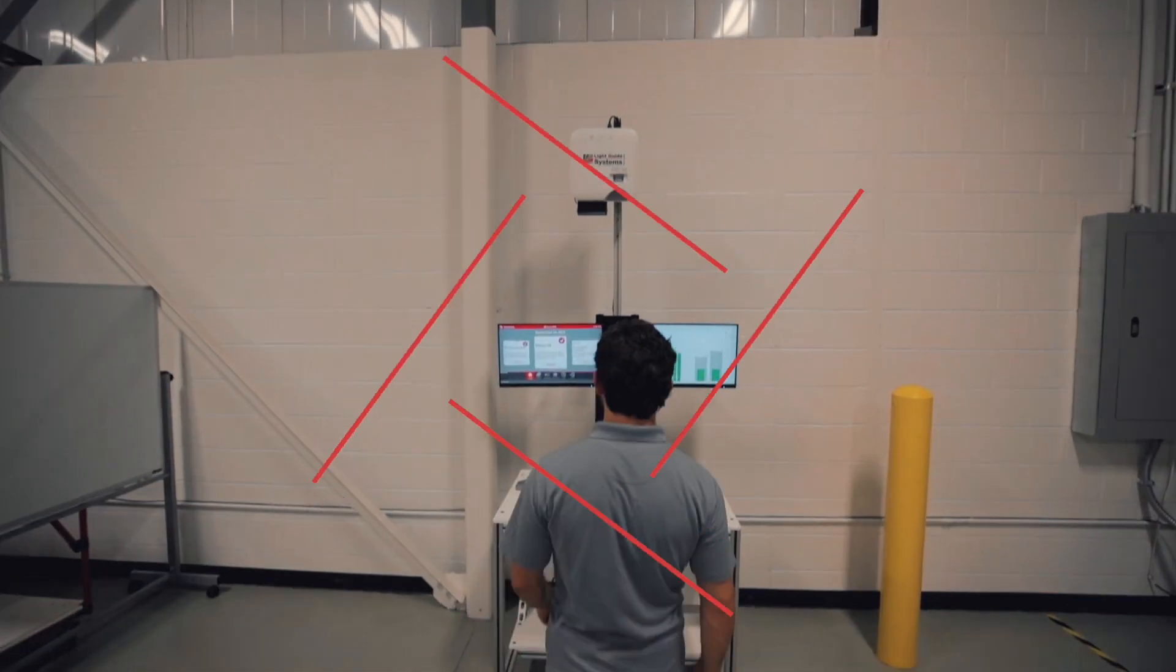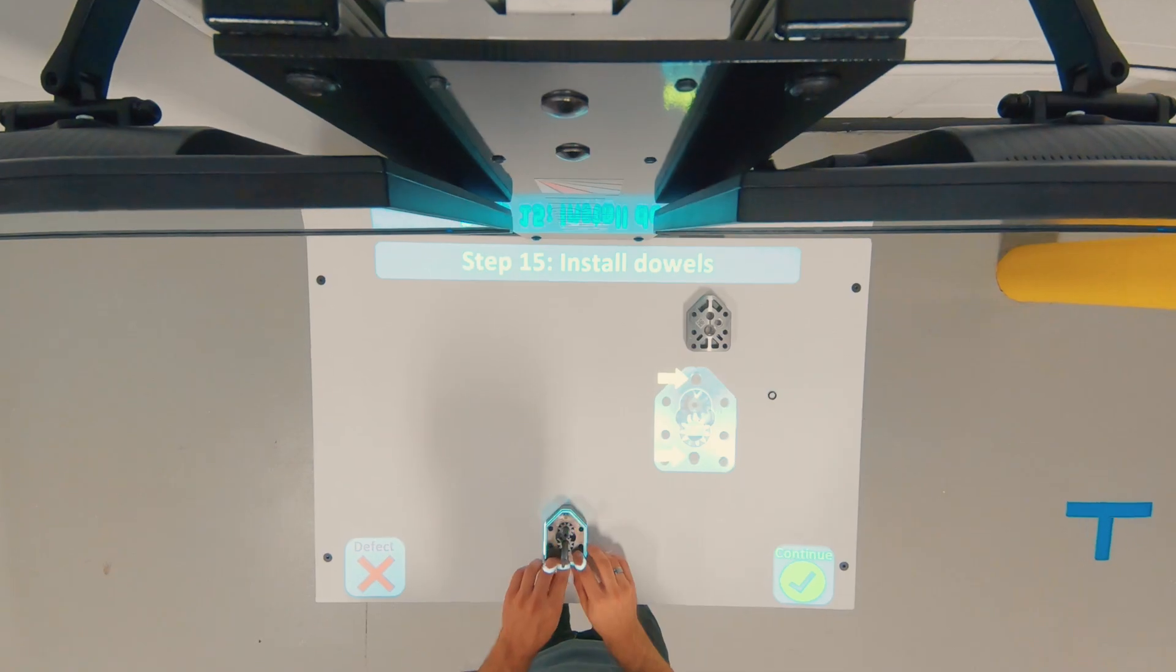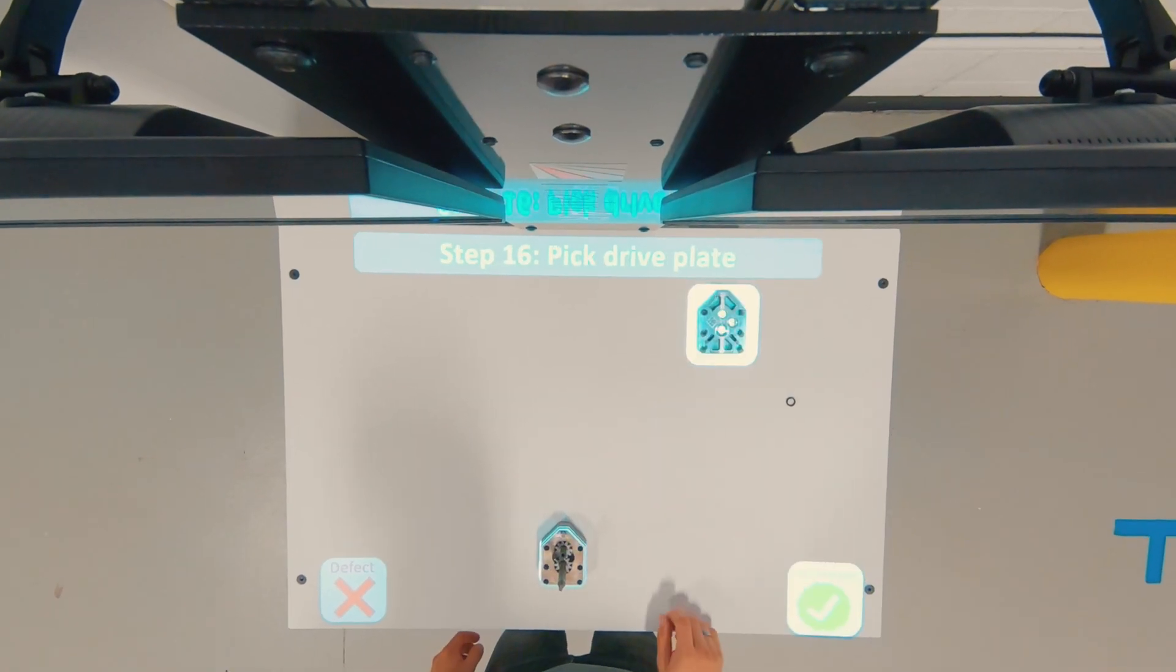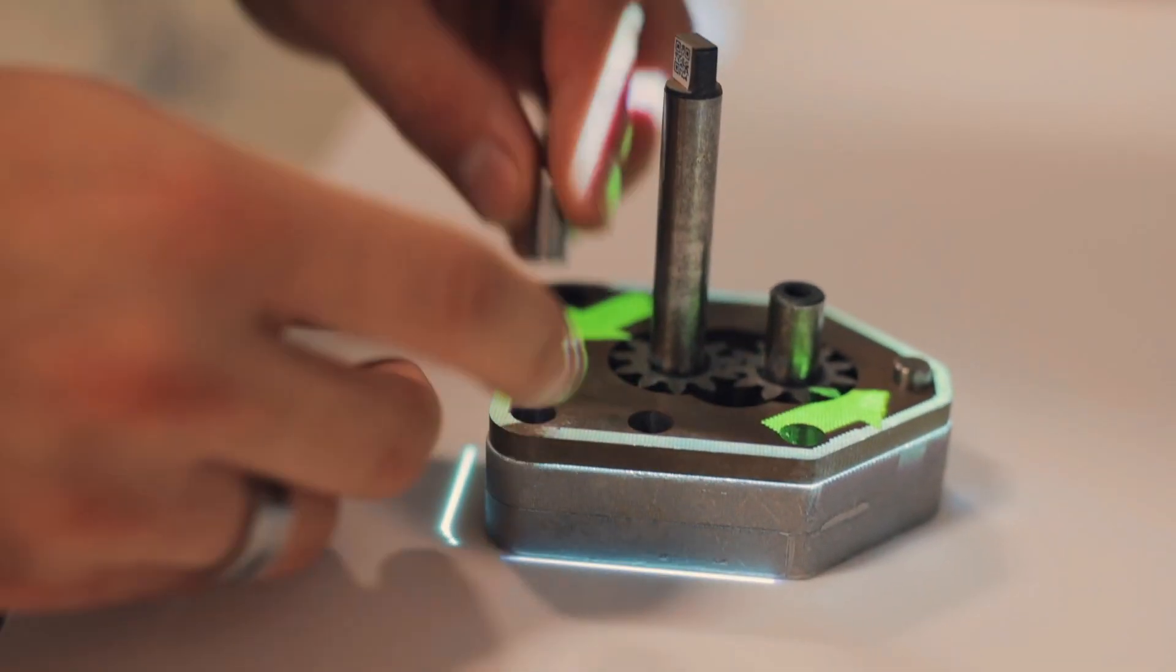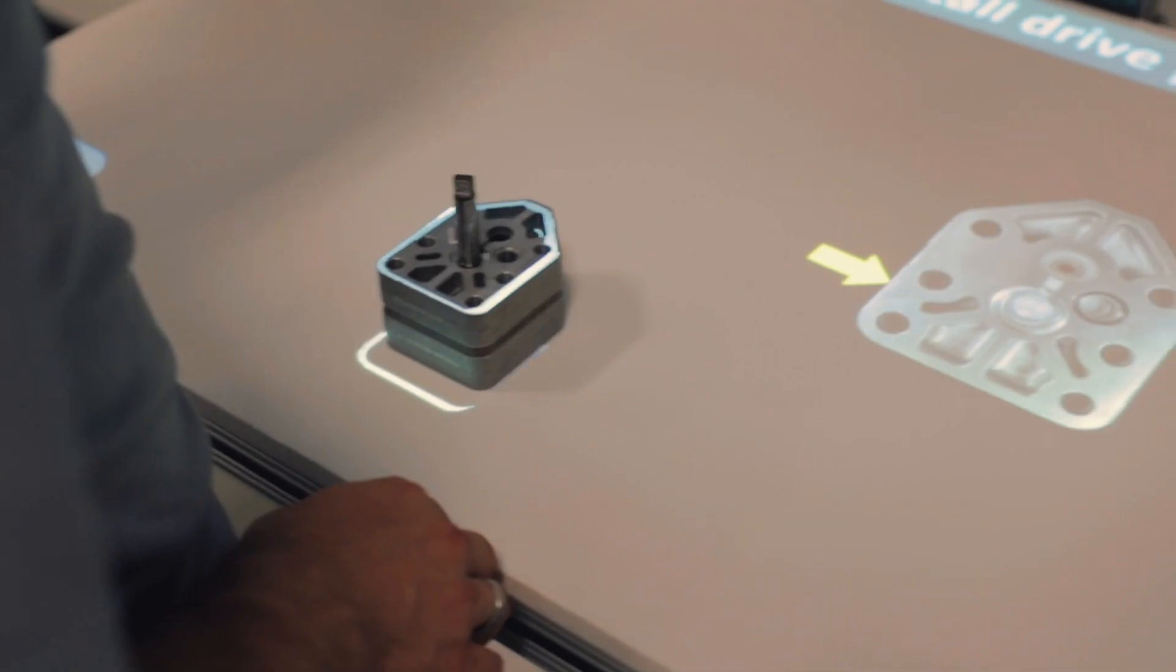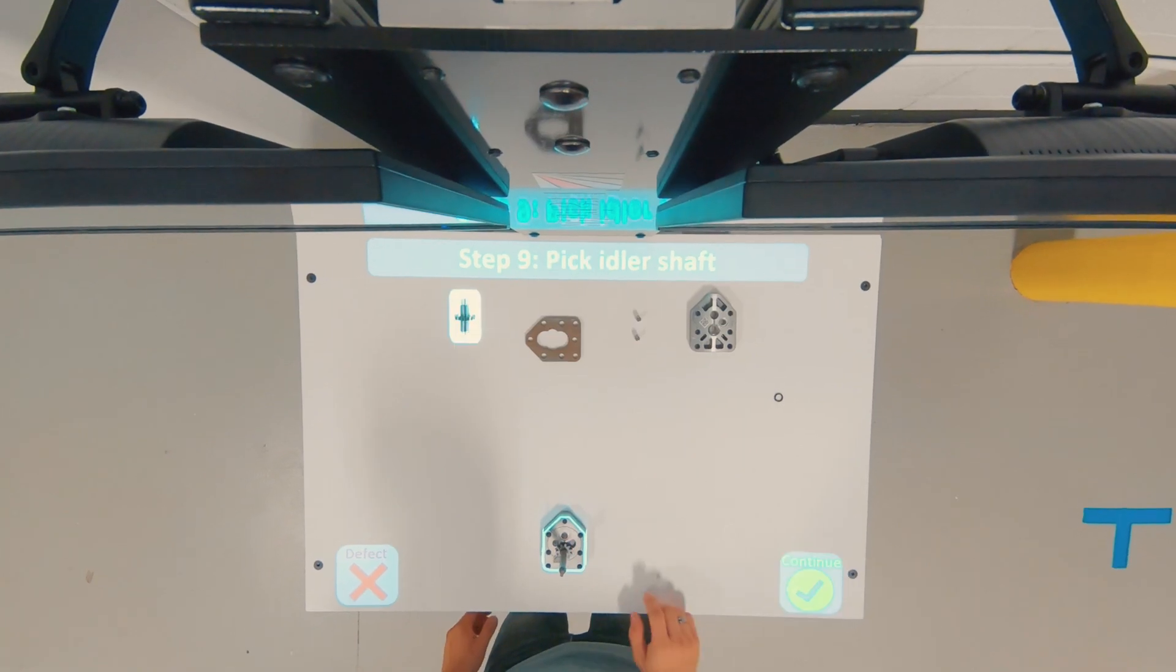Train AR dramatically improves training events by creating a visual canvas that can be projected onto any type of part or assembly and providing step-by-step work instructions using both visual and audible guidance and prompts.